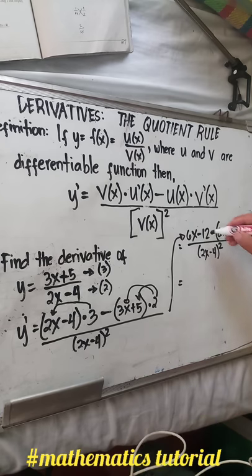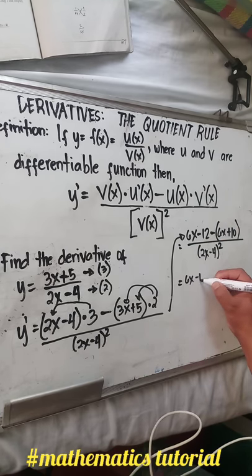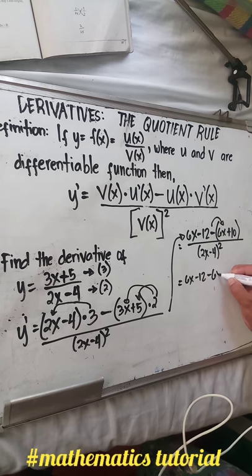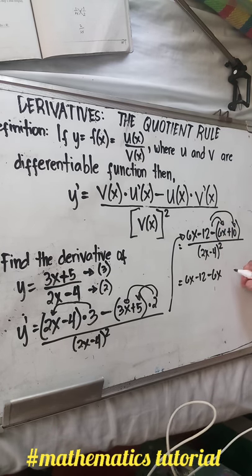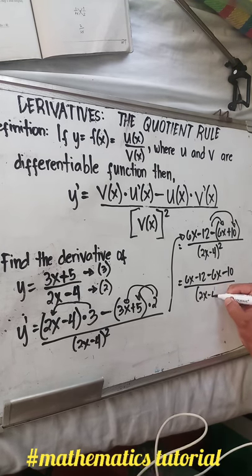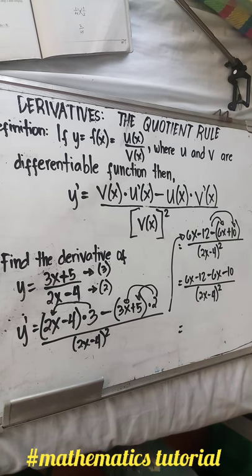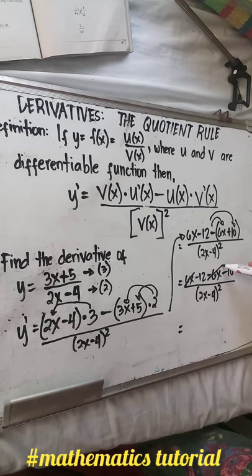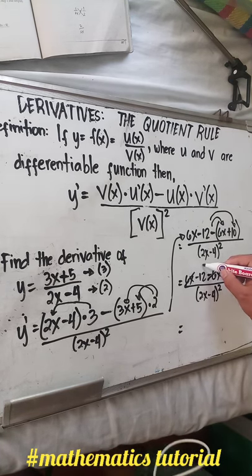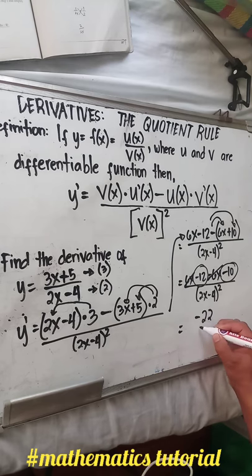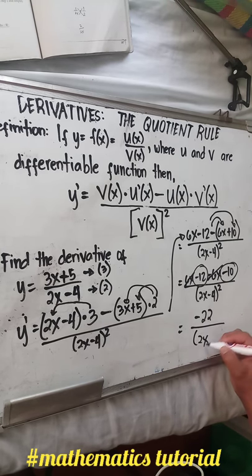Simplify further: 6x minus 12. Then distribute the negative sign: negative 6x minus 10, over (2x minus 4) raised to 2. Equals: 6x minus 6x is 0. The remaining value is negative 12 minus 10, which is negative 22, over (2x minus 4) raised to 2.